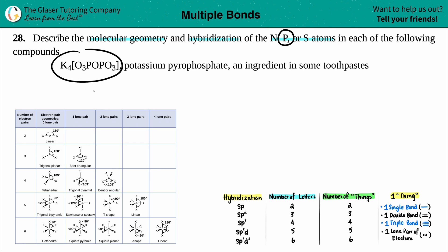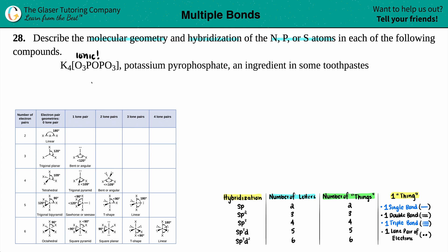The first thing I notice is that I have a metal, and remember: metal compounds are always ionic. When you're searching for molecular geometry and hybridization, it's always for covalent compounds. So I have to break this up into its components. Using the crisscross method with subscripts, potassium is a +1 charge (it's in group one), and the whole P₂O₇ group was a -4 charge.